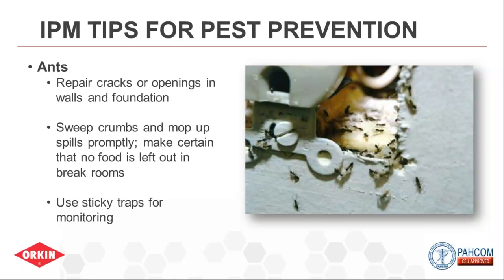Remove food sources. I've gone into numerous break rooms where the floor looks clean, but once you pull out the fridge or the microwave, there's tons of food underneath. Make sure you have routine cleaning procedures and work with your janitorial staff to clean not just visible surfaces but what lies beneath. Ants will find food and prefer sources where you can't see them. Sticky traps can monitor for ants — your pest management provider can even locate the food source, trail, and ultimately the colony or nest, which is where you actually need to focus to solve the problem.